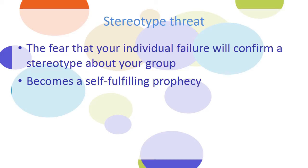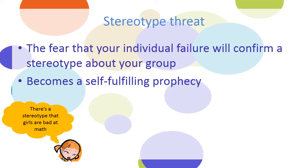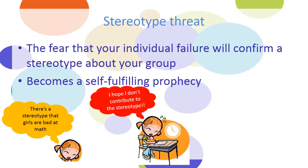Stereotype threat occurs when you know that there's a stereotype about your group and you are worried that if you fail, you're going to confirm the stereotype, and it ultimately ends up becoming a self-fulfilling prophecy. Here's Sue — she knows that there's a stereotype that girls are bad at math. She's taking a math test and stressing out because she's worried that if she doesn't do well, she's going to contribute to the stereotype.